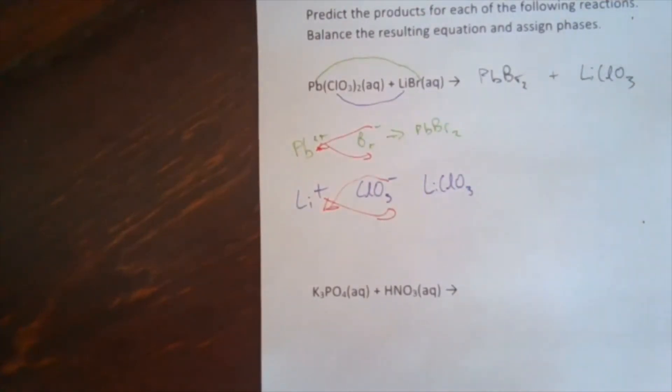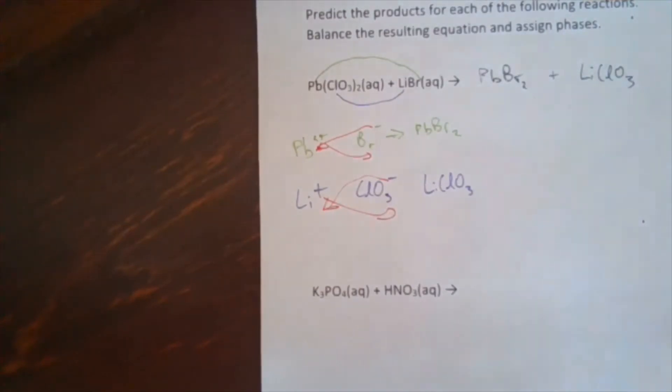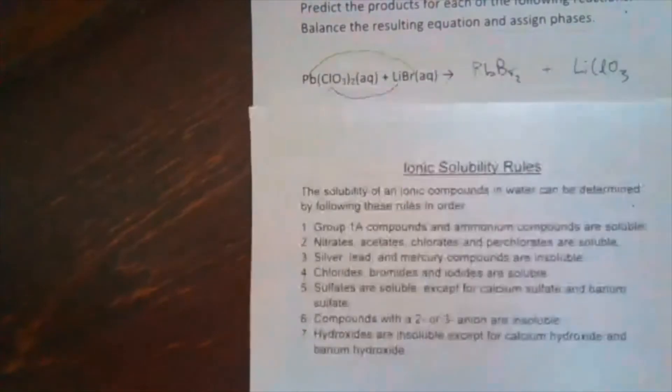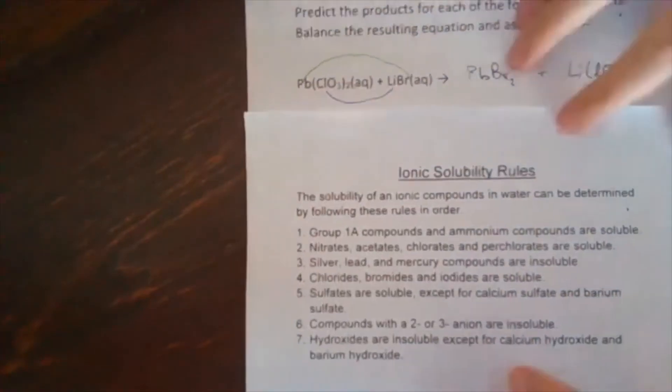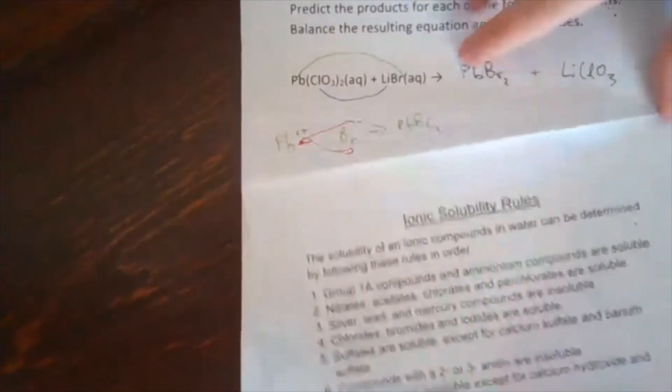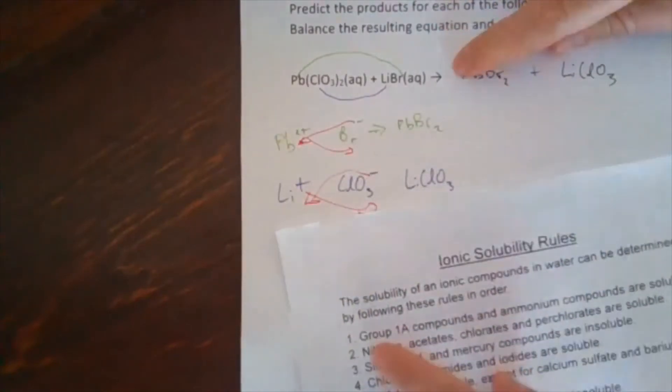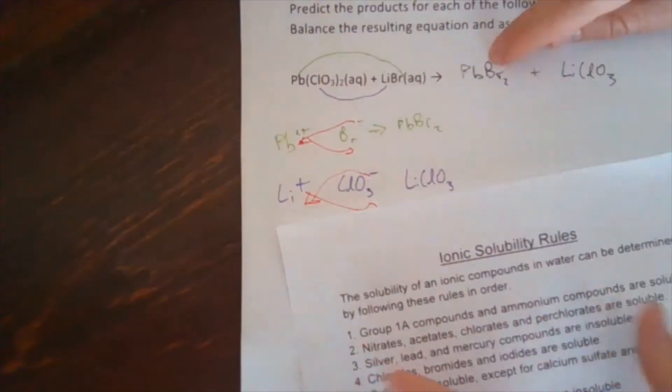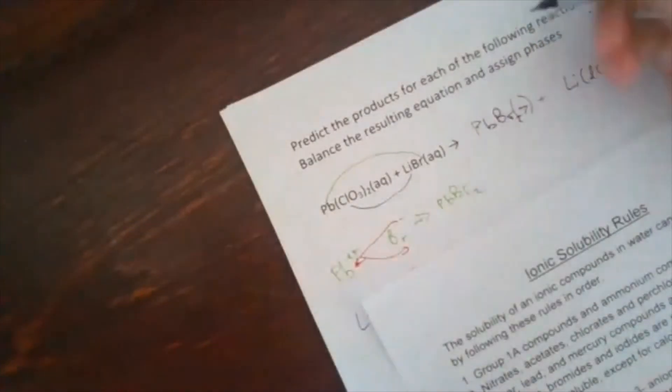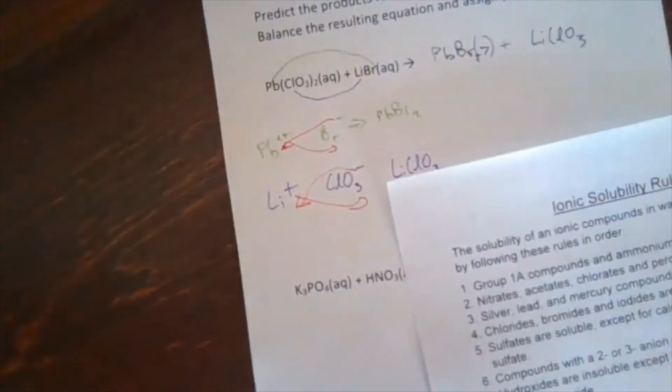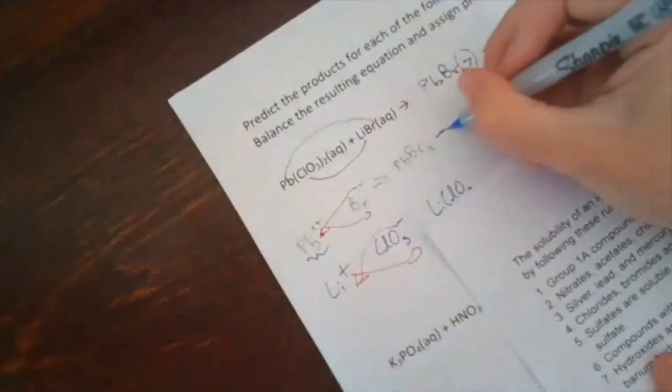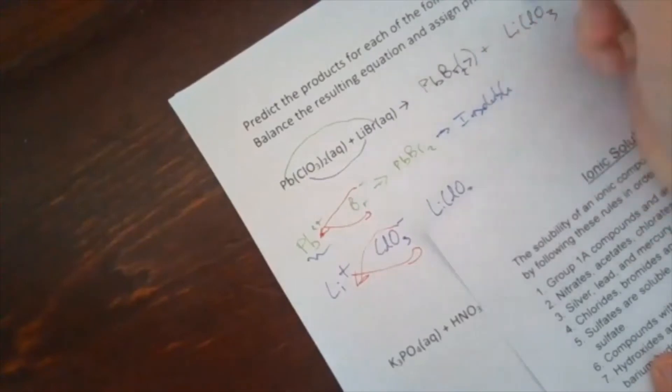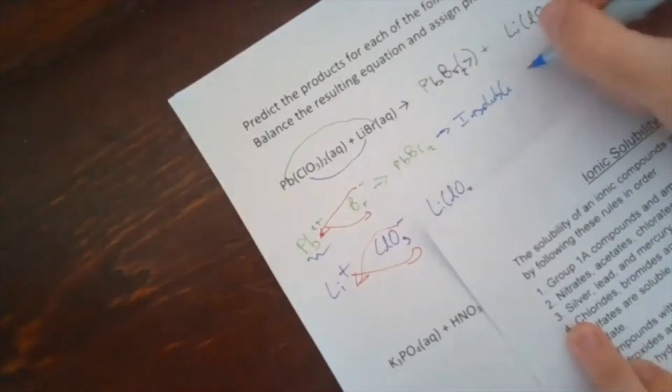So we've gotten our products. That's step one, using our ionic, forming ionic compounds. Now we want to assign phases, ionic solubility rules. So group 1A. Let's do PbBr. That's lead. Lead is not in group 1A. It's not ammonium. Bromide is not nitrate, acetate chlorate or perchlorate. Silver, lead and mercury compounds are insoluble. That thing is a solid because of the lead. This thing is insoluble. And that is rule 3. So it's a solid.